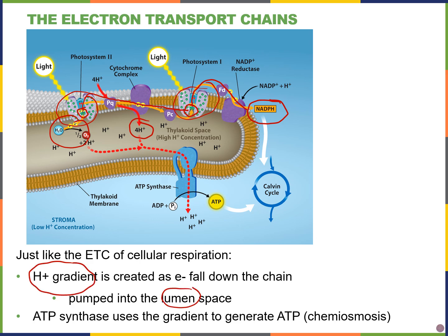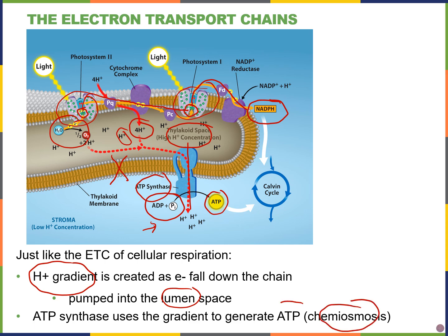There are more protons in the thylakoid lumen compared to the stroma. These protons want to go down their concentration gradient from high to low concentration, but they cannot pass through the membrane because they are charged, so they pass through ATP synthase. That releases a lot of energy to power the production of ATP from ADP and inorganic phosphate — that is through chemiosmosis, the most common method of producing ATP.